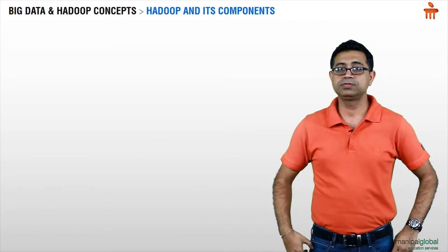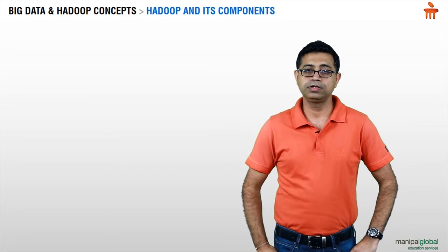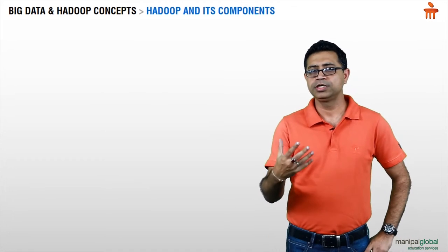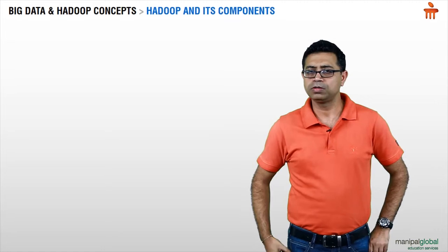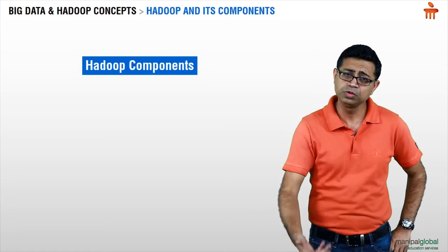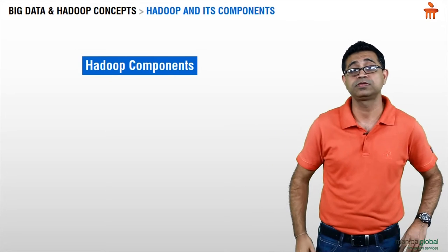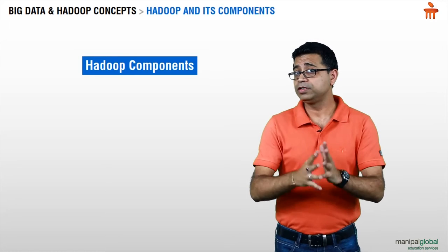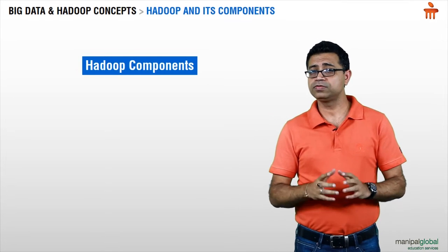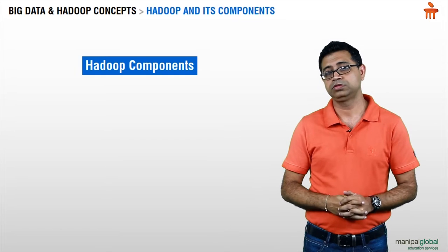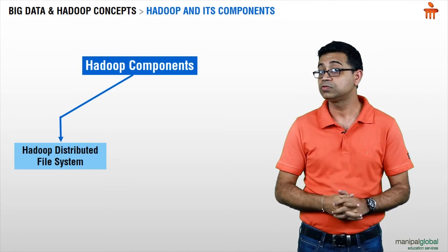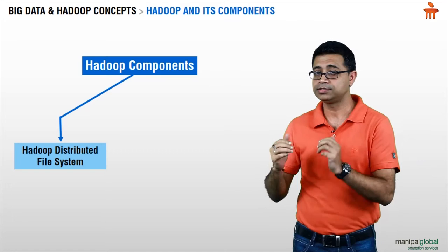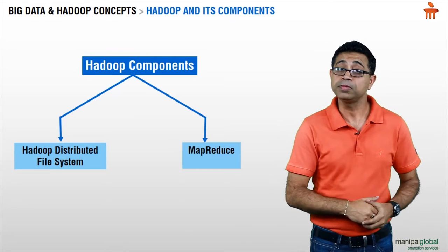Having understood the ecosystem, let's look in a bit more detail at what Hadoop is and what its various components are. Hadoop as a framework simply comprises two portions. One is HDFS — Hadoop Distributed File System — and the other part is MapReduce.